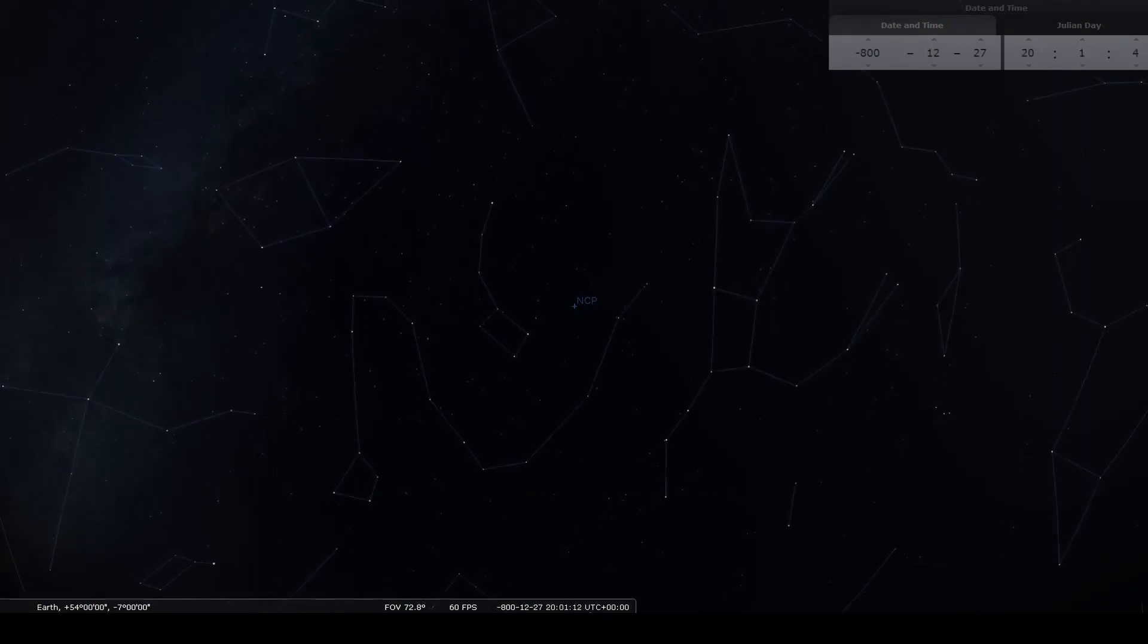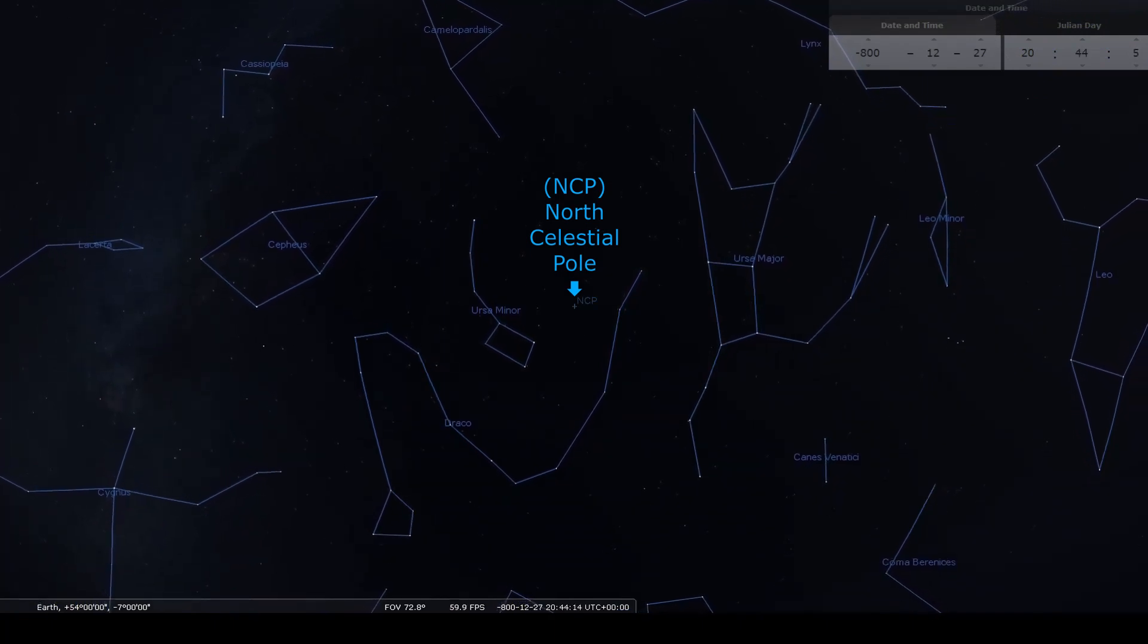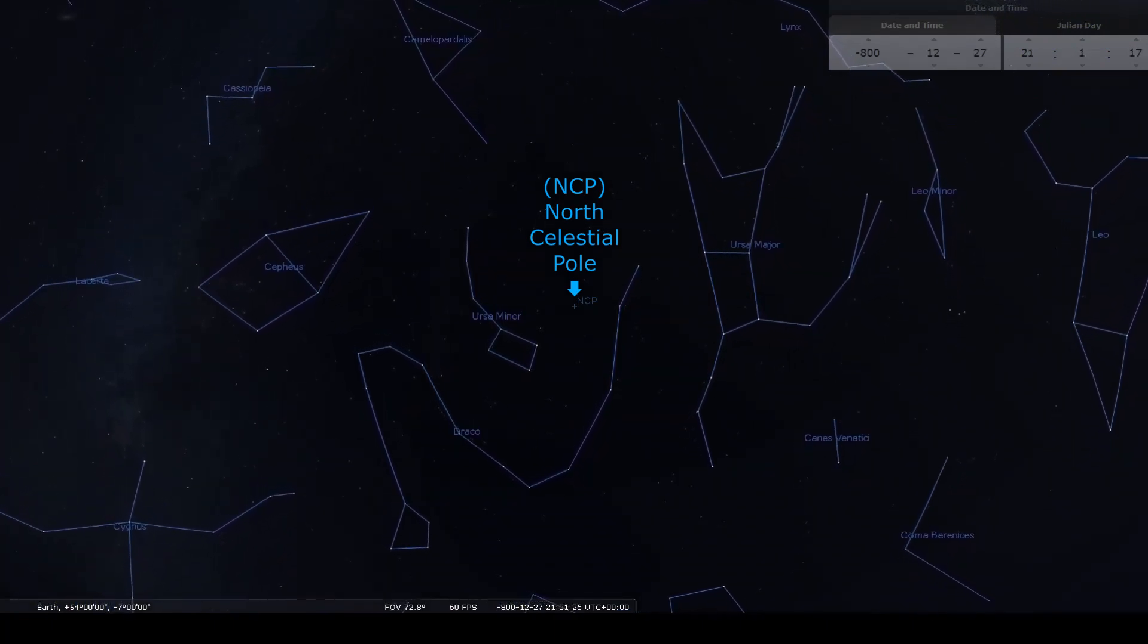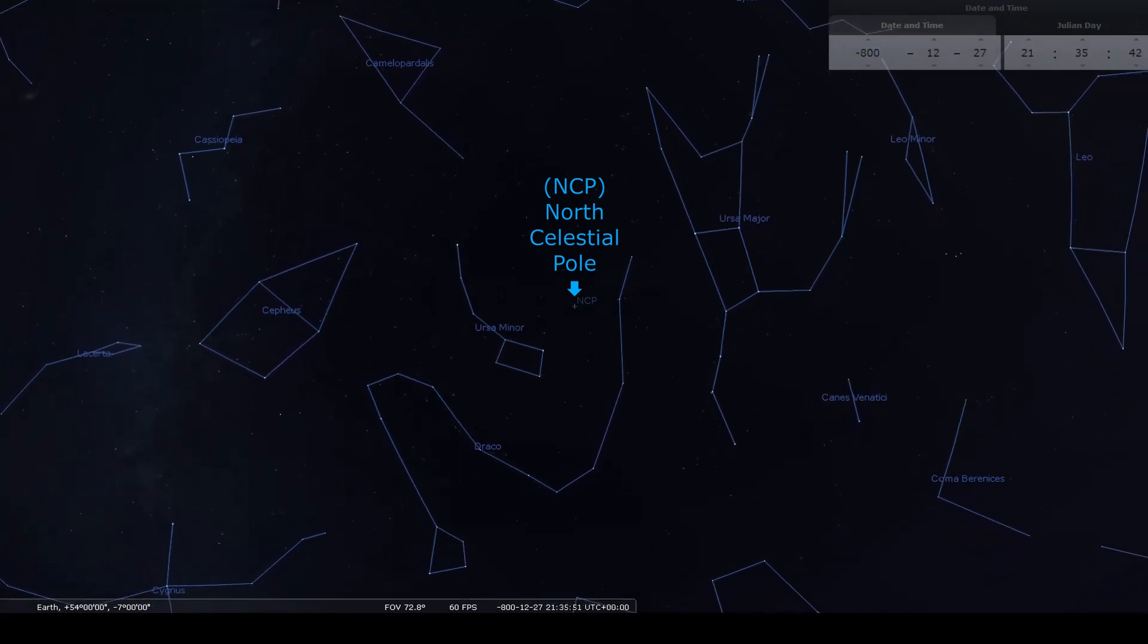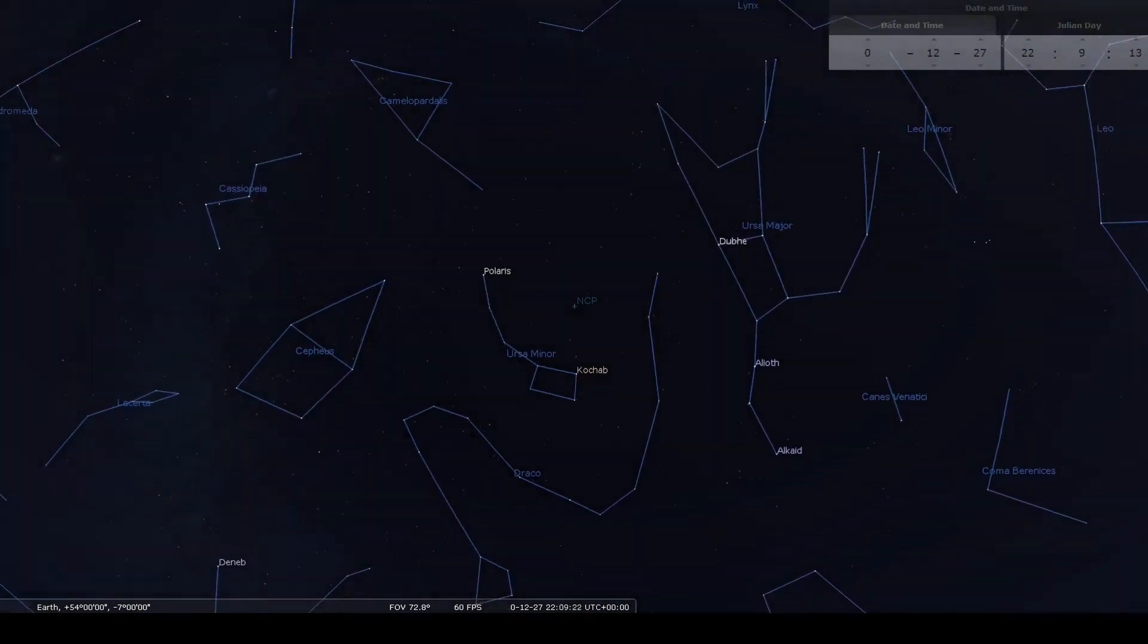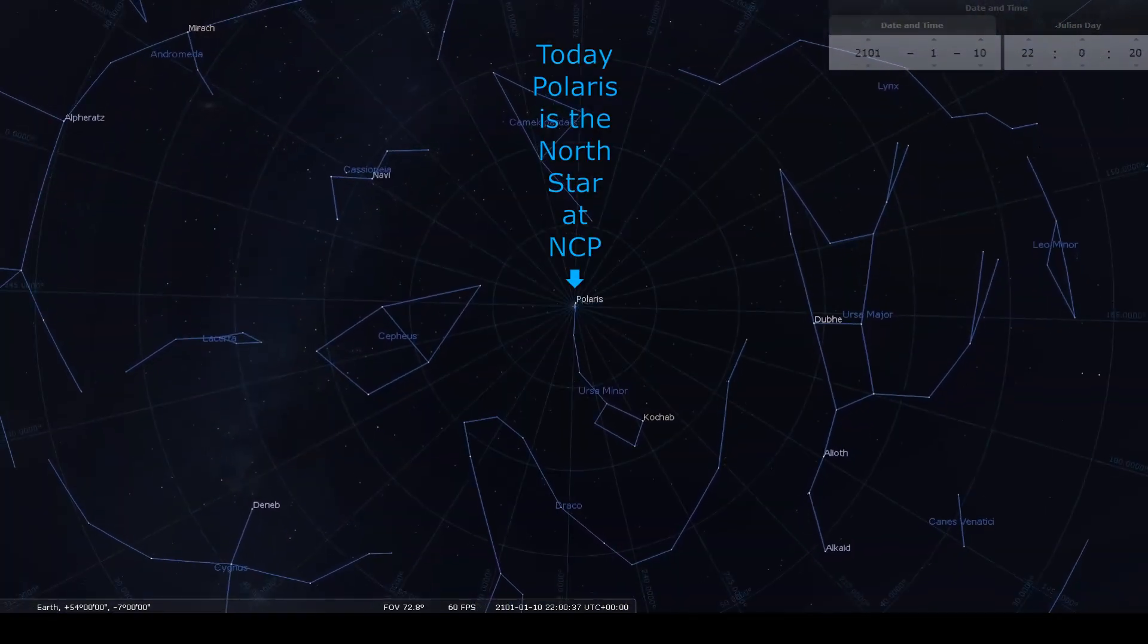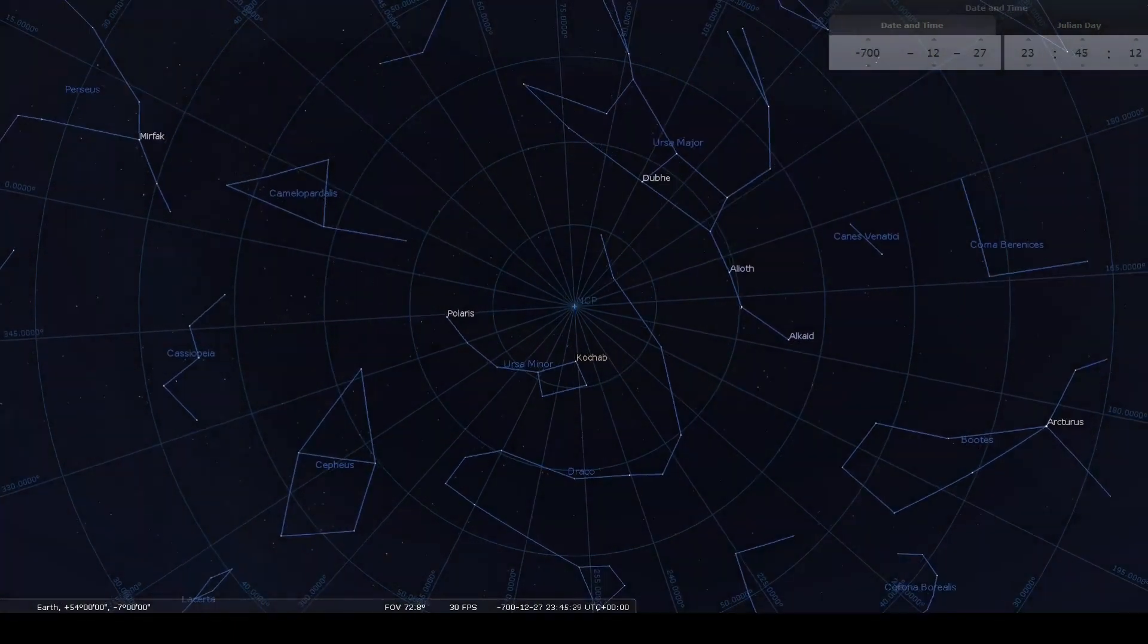Ursa Minor was very close to the North Celestial Pole during the Bronze Age in Ireland. In the Northern Hemisphere, the North Celestial Pole is the point in the sky around which the northern stars seem to rotate as the Earth spins. Today, the North Celestial Pole is marked by Polaris as the North Star, but due to precession, this was not the case in the past.